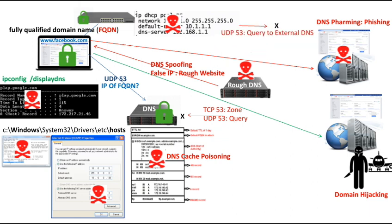Another countermeasure is to block internal queries to external DNS servers, so any rogue DNS server acting externally cannot respond with malicious data to your internal clients. Internal clients can only send DNS queries to internal DNS servers. You achieve this by blocking UDP port 53 towards external networks.